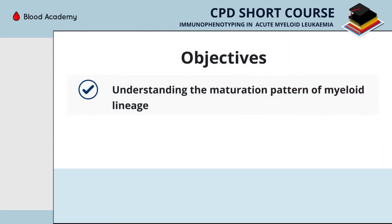The objective for this presentation is to make you understand the maturation pattern of myeloid lineage — to show you how normal granulocytes or monocytes, and normal myeloid blasts in the marrow, how do they mature, and at what stages, what markers do they express.